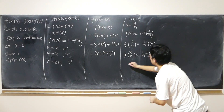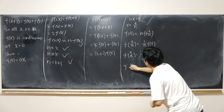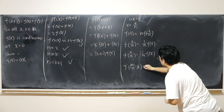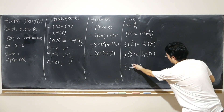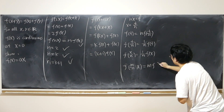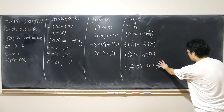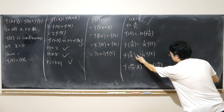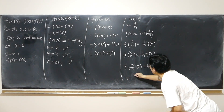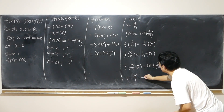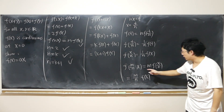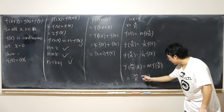According to this logic, f of (m/n)·x equals m times f of x over n, since we can multiply the positive integer m out. And then again, we can take out the 1/n factor, giving m over n times f of x. So this tells us that for any positive rational number in front, we can always multiply it out.